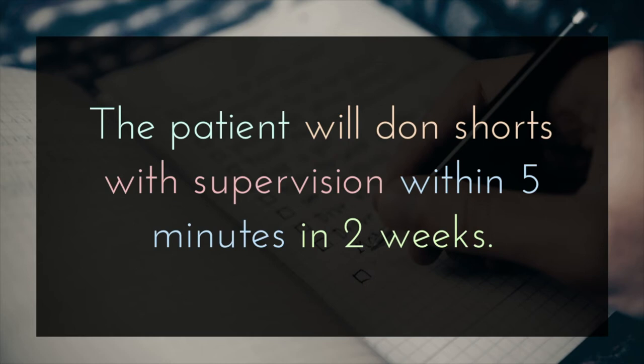I wanted to specifically highlight in this goal the difference between a specific condition — what conditions does this goal need to be met under, which is that it needs to be done within five minutes, likely targeting efficiency at this point — and then two weeks being when this goal is anticipated to be met. So T is more timeline instead of a specific condition.